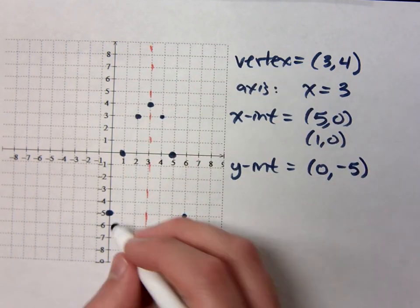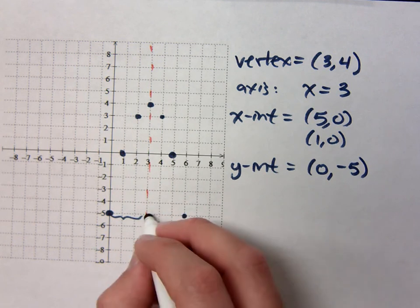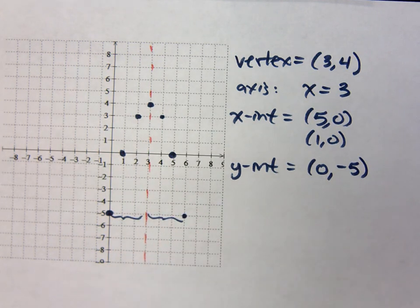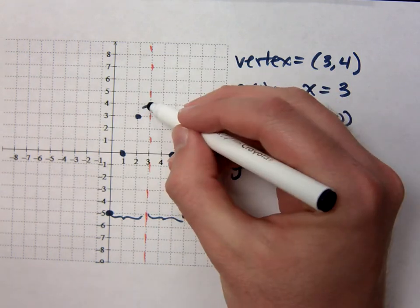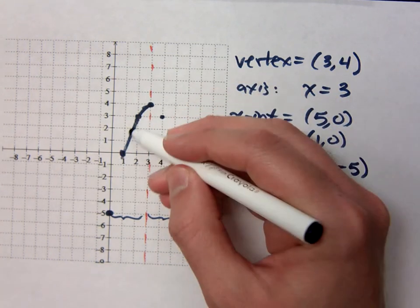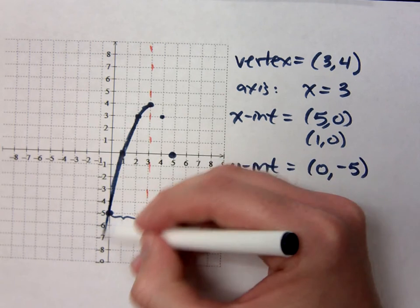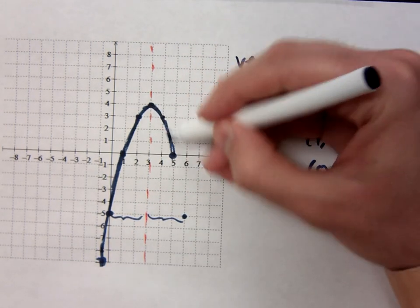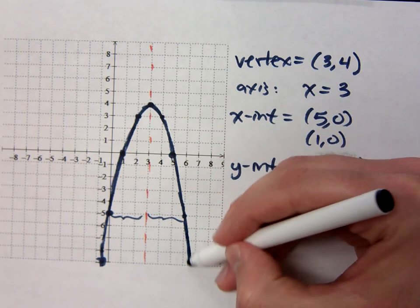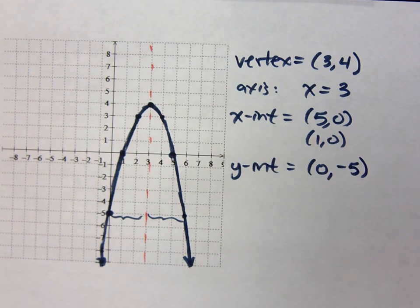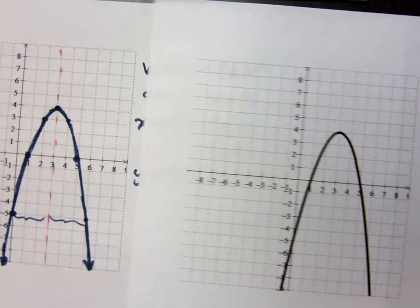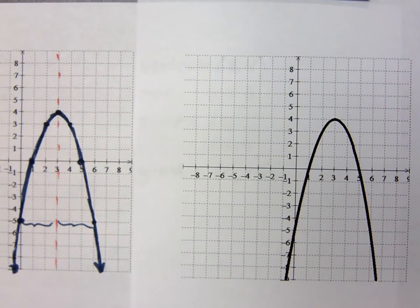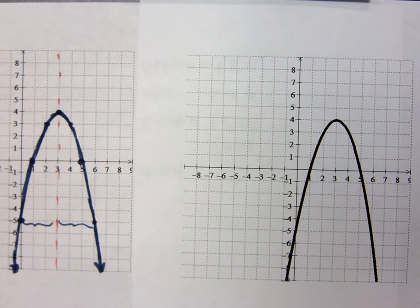And you see that this guy right here is 3 units away, and that's also 3 units away from that axis of symmetry. So we connect the dots, make a nice smooth curve. And when you check this, you see it's the same thing. It's the same thing.